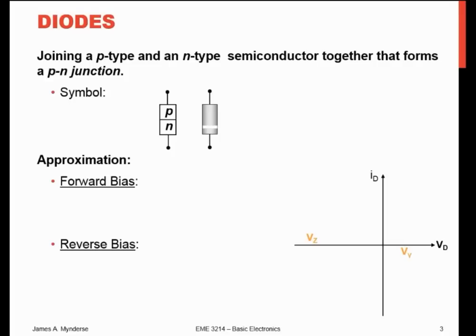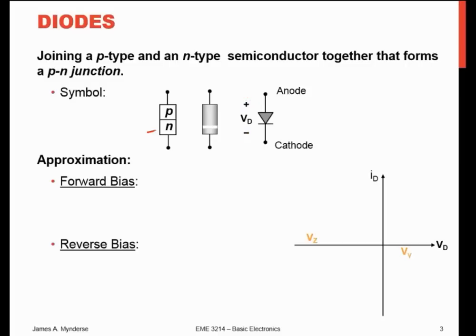Our diode here has the P-type material and the N-type material. They often look like this with a white band to tell us which way is which, because obviously you have to know which way is which on these things. There is the symbol that you see in a schematic — labeled plus and minus for a forward biased diode. That's the anode; that's the cathode. It will conduct electricity from plus to minus in that direction. So if we're forward biased like that, the current will flow.